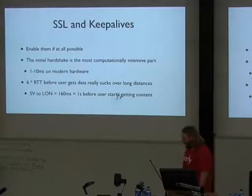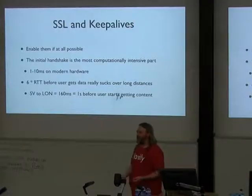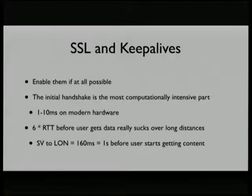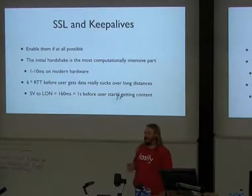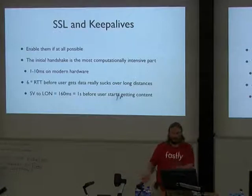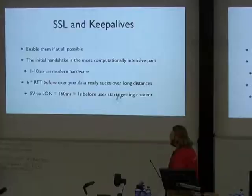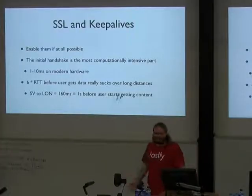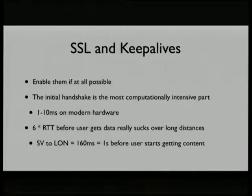Another aspect to think about is how the protocols interact. HTTP takes four round trips to establish a connection — the TCP handshake plus the GET going back and forth to create the initial connection. SSL actually takes six round trips. When you have these round trips, the time before a user actually starts getting content matters a lot, especially if you're in Australia talking to US websites hosted in EC2. This is partly why CDNs exist.